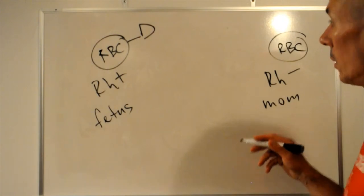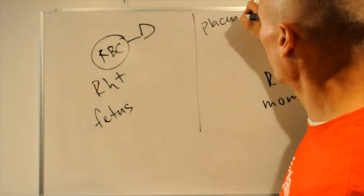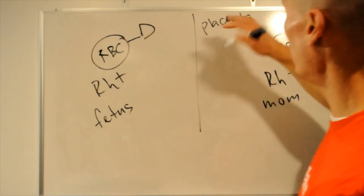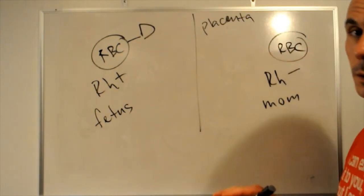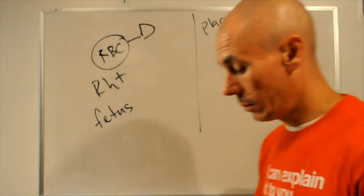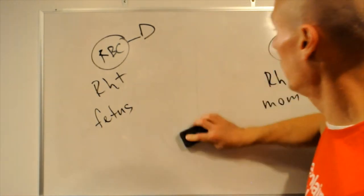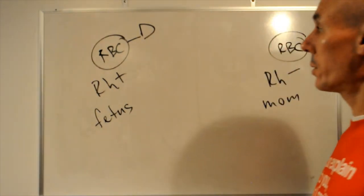Okay. So, they are separated by placenta. Everything's fine. Now, that's the first child. During birth, placenta detaches and some of the fetal blood enters the mother's circulation.